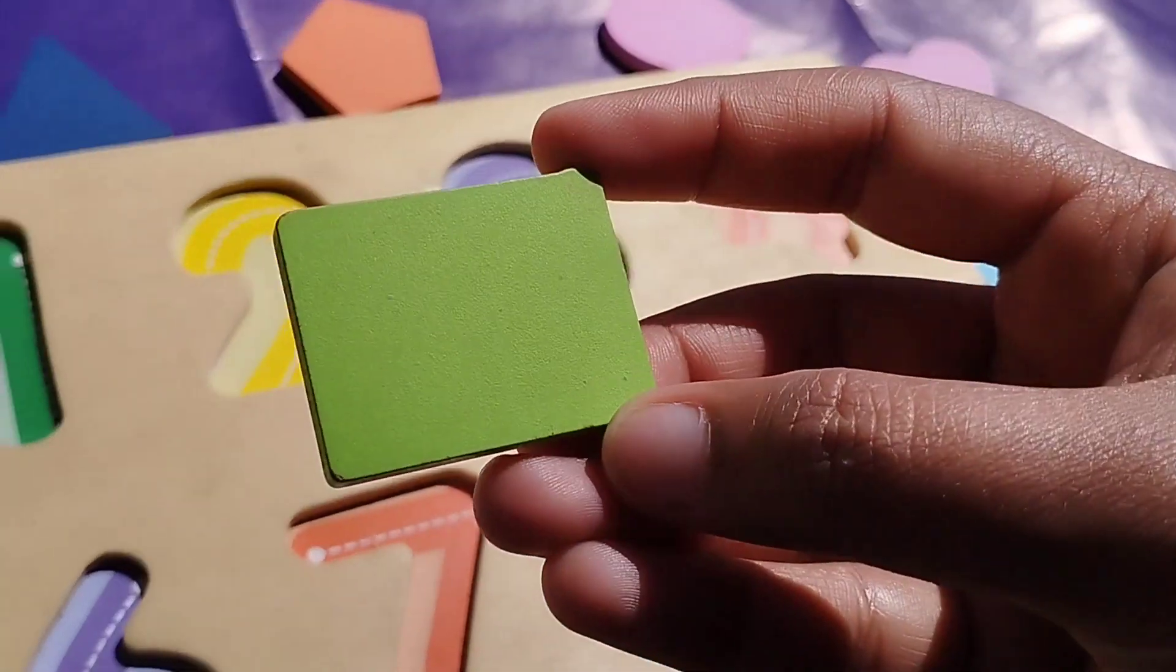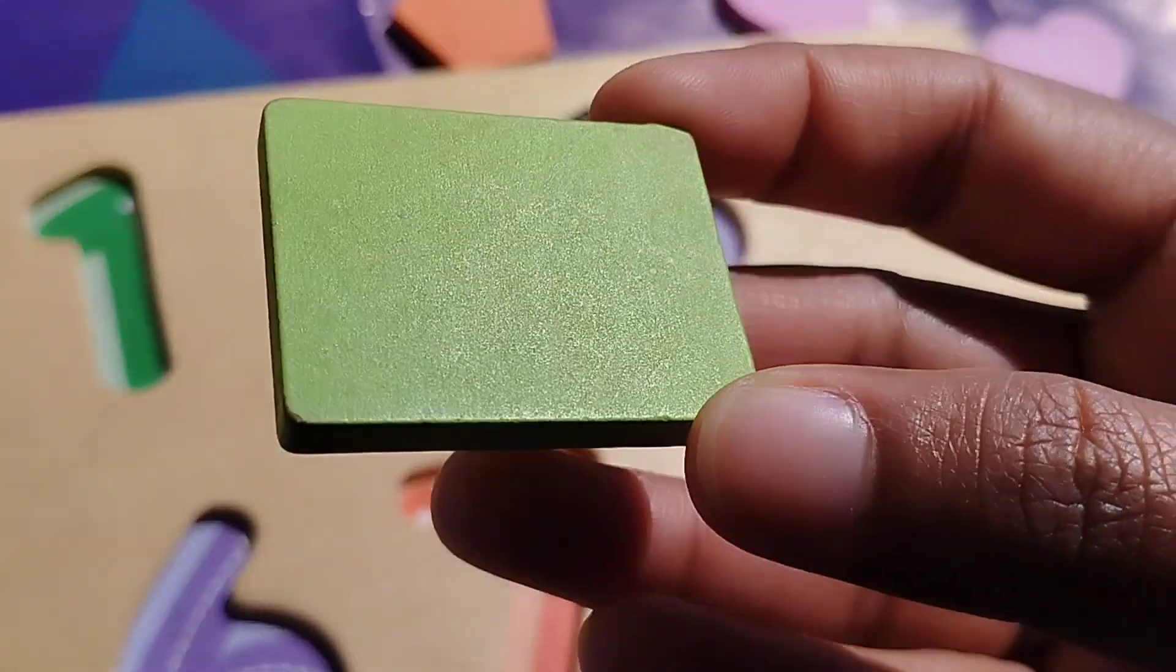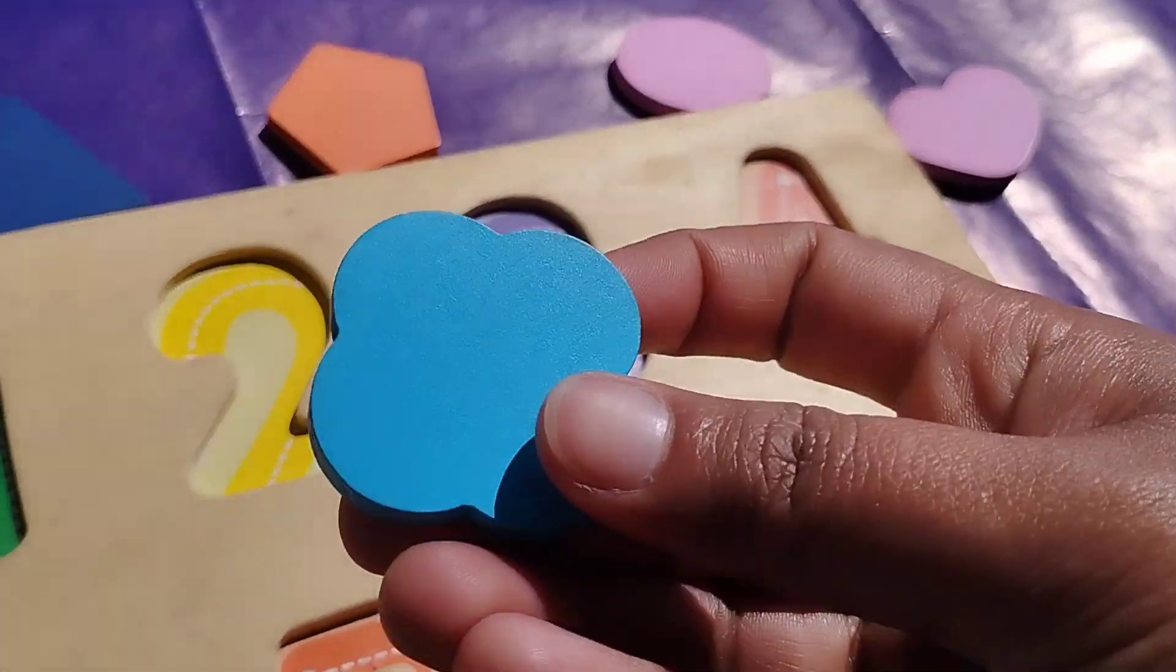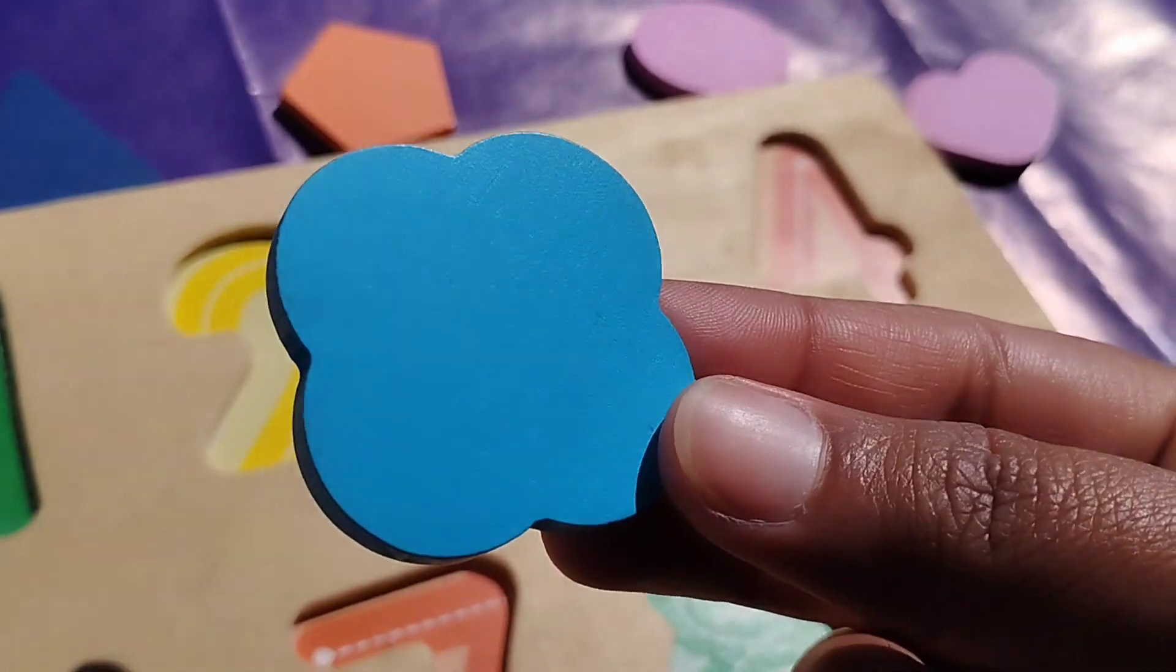Let's learn some shapes name. Rectangle. This is rectangle shape. Flower. This is flower shape.